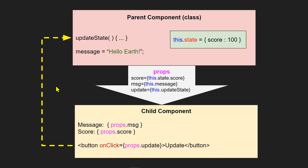First, let's look at a diagram between two components. At the top is a parent component — it's a class type because it has state. At the bottom is a child component, which could be either a function or a class. In between, there's a large arrow going down from parent to child, showing that data flows in one direction from the parent down to the child.